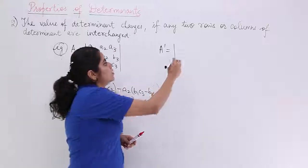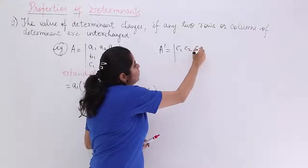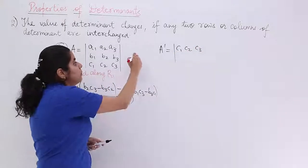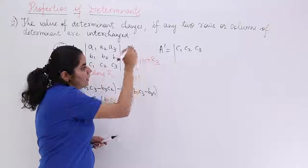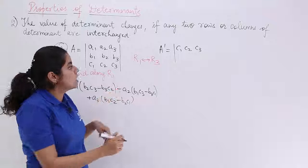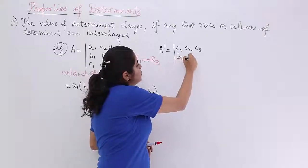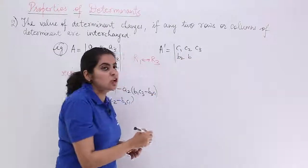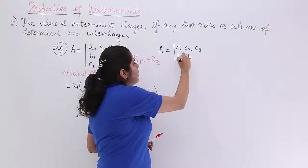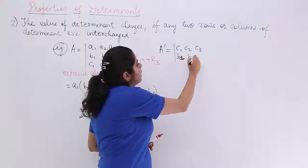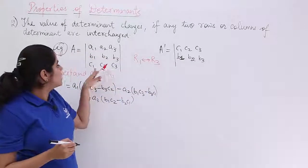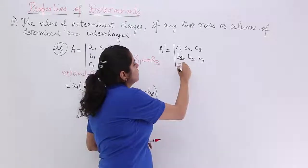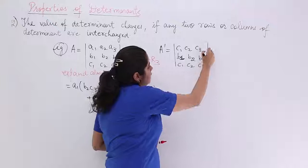These are changing. So I write here C1, C2, C3. What operation I am applying? I am basically interchanging R1 and R3. These rows are interchanging. B1, B2, B3 does not change. So this is my B1, this is my B2, this is my B3. Last but not least, what I have is C1, C2, C3. So this is C1, C2, C3. Understood?